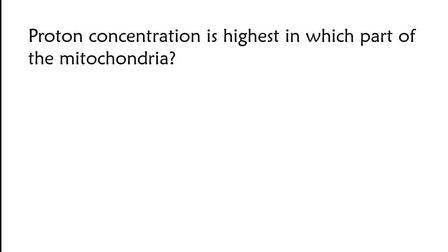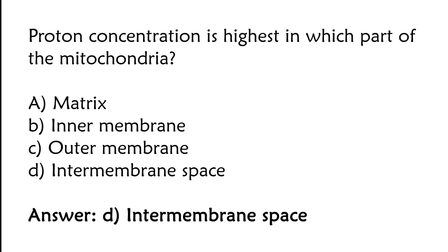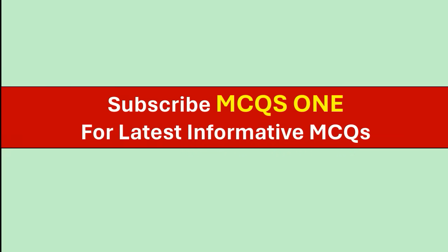Proton concentration is highest in which part of the mitochondria? Matrix, inner membrane, outer membrane, or intermembrane space. The correct answer is option D — intermembrane space. Thanks for watching; subscribe MCQ1 for latest informative MCQs.